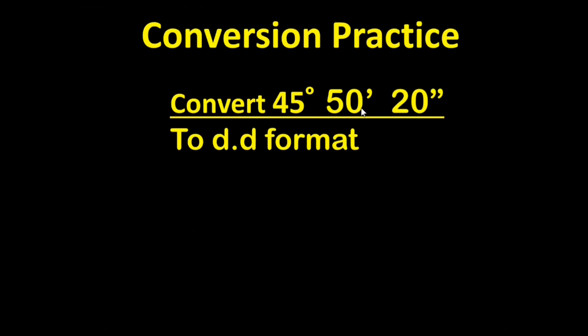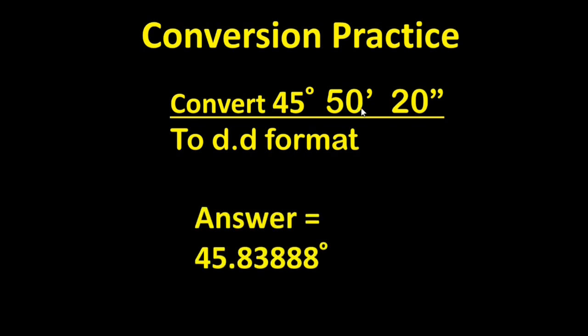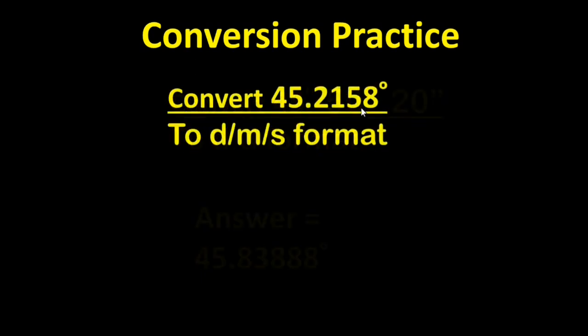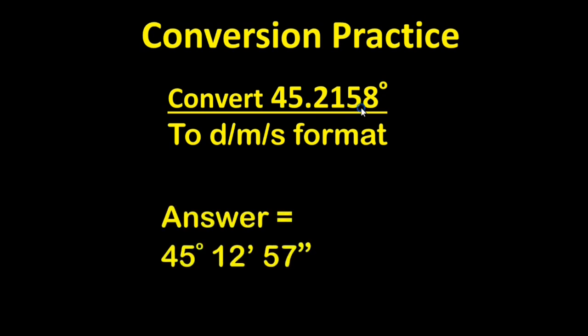Let's try the second conversion exercise. Convert 45 degrees, 50 minutes, 20 seconds to the decimal degree format. Pause the video and give it a whirl. If you came up with 45.83888, you're right on. If not, try it again. Let's try one last one — convert 45.2158 degrees to the degree, minute, second format. The answer is 45 degrees, 12 minutes, 57 seconds. Did you get the right answer? If not, try it again.